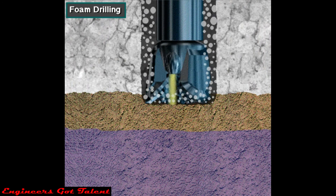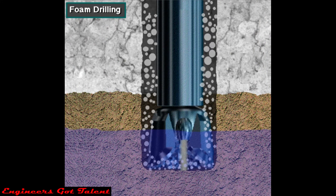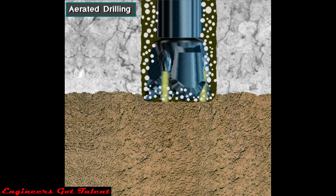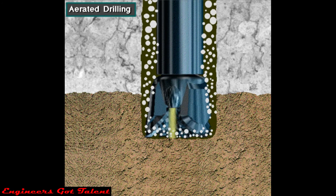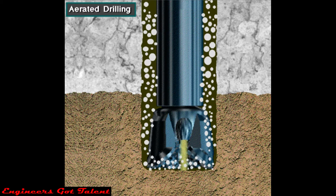If small amounts of water are present in the formations being drilled, special equipment can inject a foaming agent into the air stream. The foam helps separate the cuttings and remove water from the hole. In some cases, the rig operator may use aerated mud, which, like foam drilling, helps prevent clogging of the wellbore. Aerated drilling uses both mud and air pumped into the standpipe at the same time.